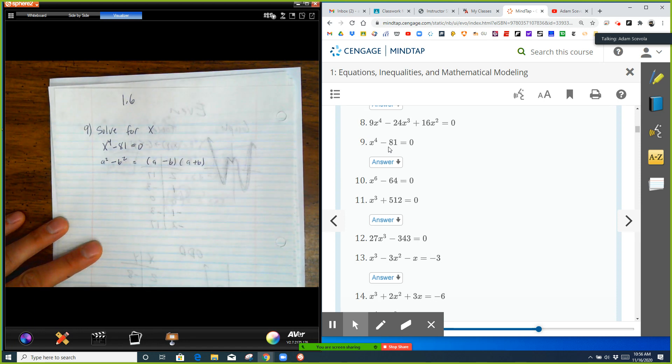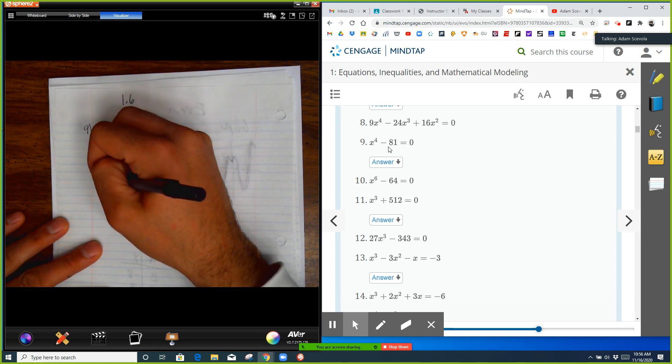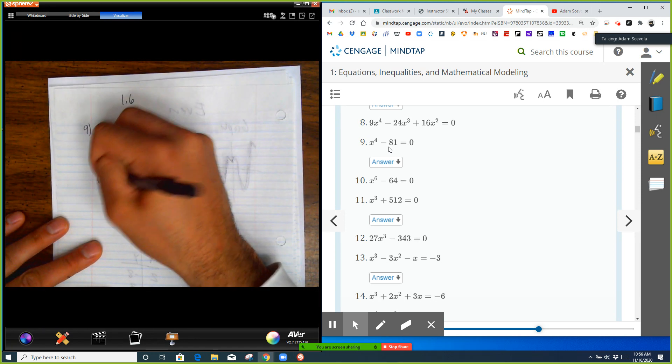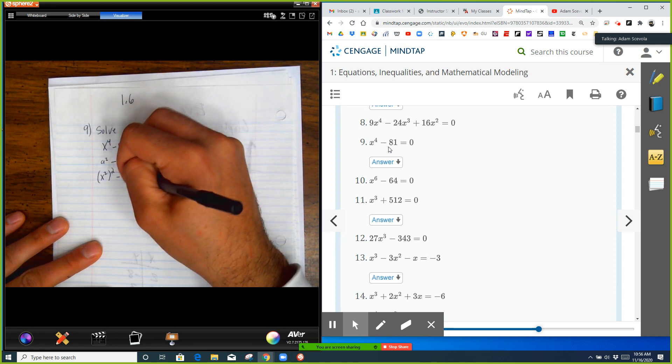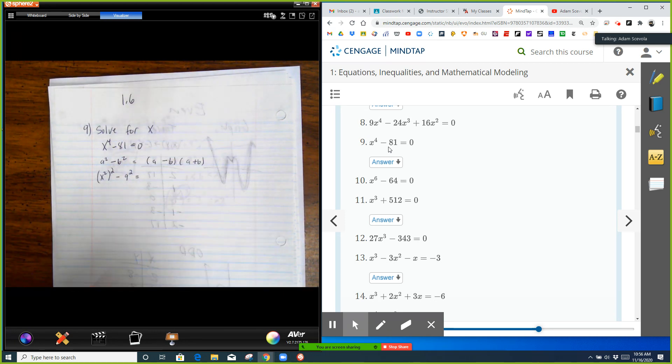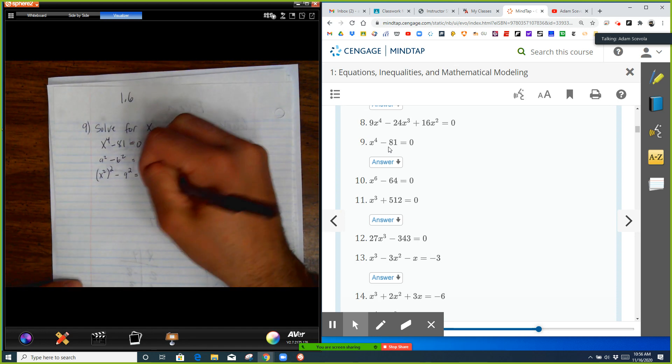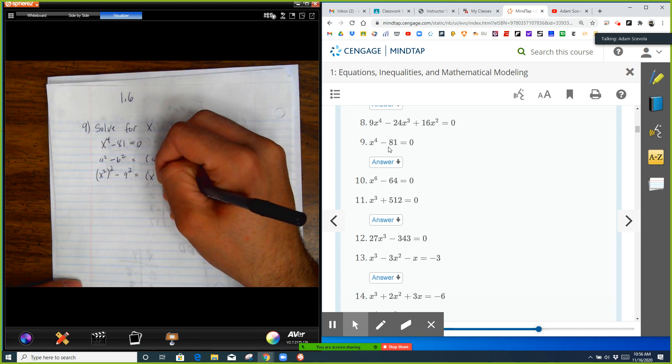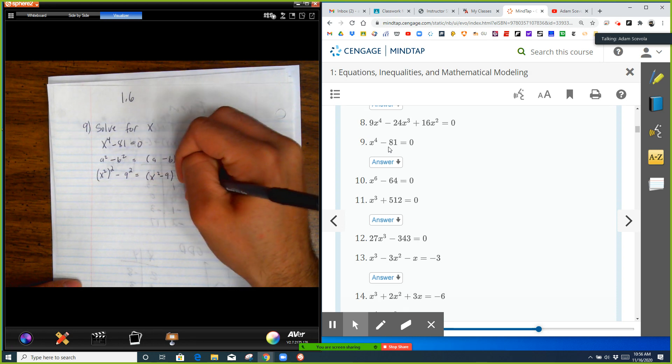In other words, a is x squared and b is 9. So we can factor it out as x squared minus 9 times x squared plus 9 equals 0. Now we went from a fourth degree polynomial to two second degree polynomials multiplied together.